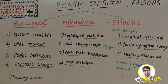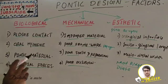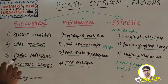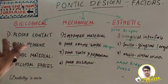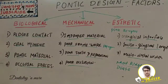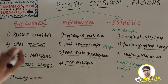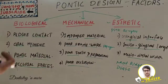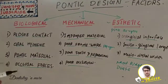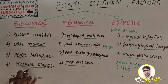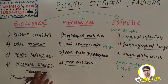Regarding pontic material, it should have good aesthetics where required, be biocompatible, and have enough strength and rigidity to withstand occlusal forces. It should also have good longevity. The FPD should be made as rigid as possible, because any flexural forces during mastication or parafunction may cause pressure on the gingiva and risk fracturing of the veneering material or the pontic.